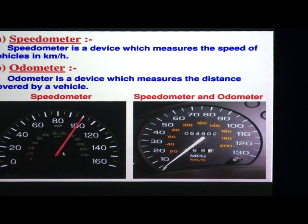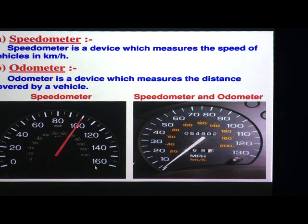These are numbers you can see on the speedometer. On the inner side there are again the same markings: 0, 20, 40, 60, 80, 100, 120, 140. These numbers are given here on the speedometer display.